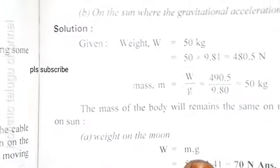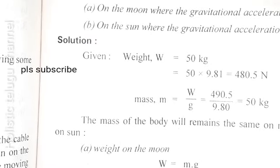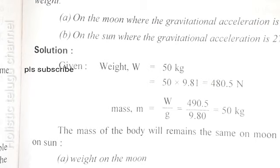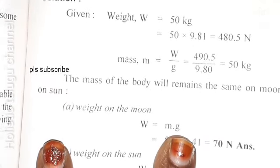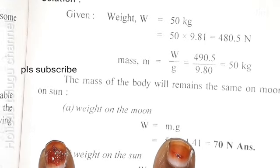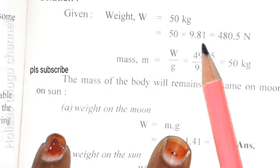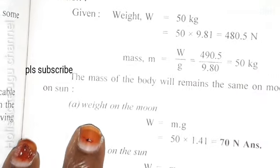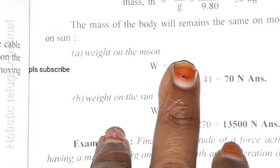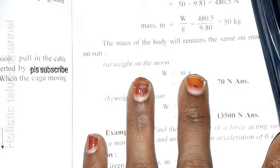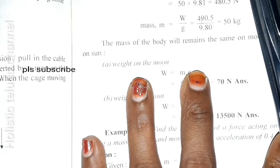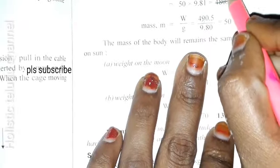Problem: a body weight 50 kg on the earth — find its weight on the moon where gravitational acceleration is 1.4 m/s², and on the sun where gravitational acceleration is 270 m/s². We need to find the weight in newtons. Mass equals W by G. Weight on Earth equals 50 into 9.81 equals 490.5 N.